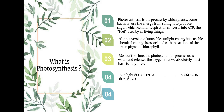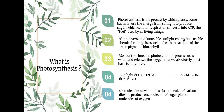Sunlight processes: 6CO2 + 12H2O → C6H12O6 + 6O2 + 6H2O. Six molecules of water plus six molecules of carbon dioxide produce one molecule of sucrose plus six molecules of oxygen.